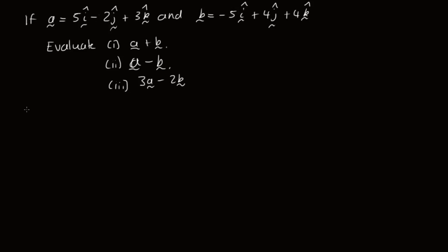So to do this, part 1, we've got to evaluate a plus b. So what we do is add the i components. So we've got (5 minus 5)i, plus here we've got (minus 2 plus 4)j, plus in this case (3 plus 4)k. So we can write this as 5 minus 5, that's 0, so we can write 0i, or we could just leave this term off altogether. Then we've got plus 2j and plus 7k.